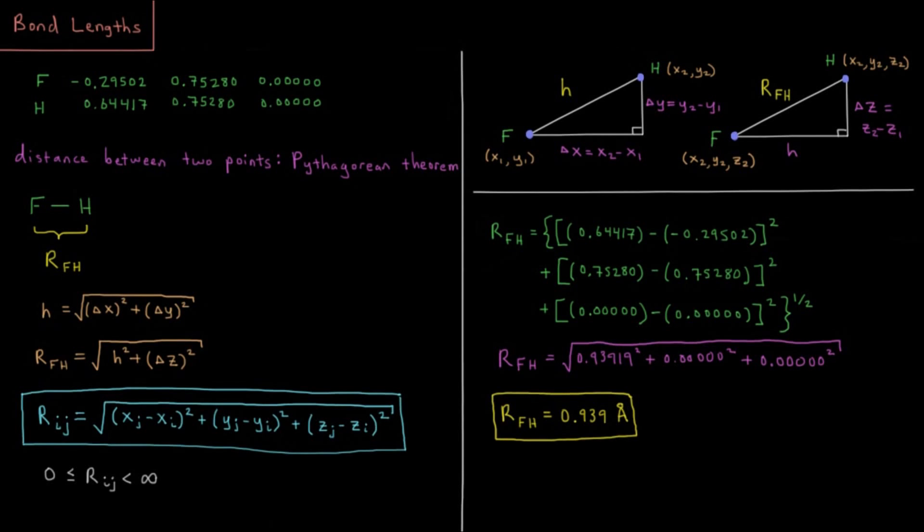This video will discuss how to compute bond lengths inside of molecules. Let's say we have a hydrogen fluoride molecule. In my XYZ file, the atom records would be indicated like this. I might have the fluorine, its XY and Z coordinates indicated here, the hydrogen with its XYZ coordinates indicated here.